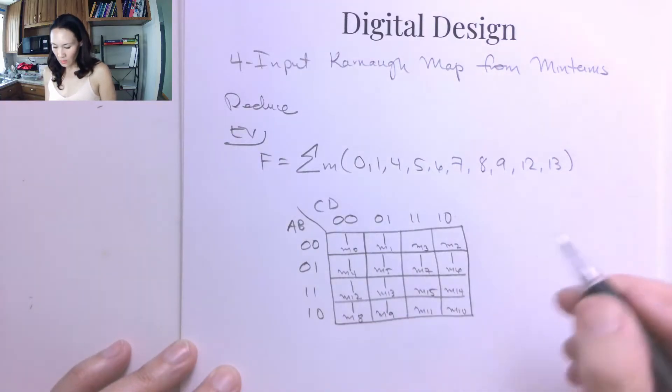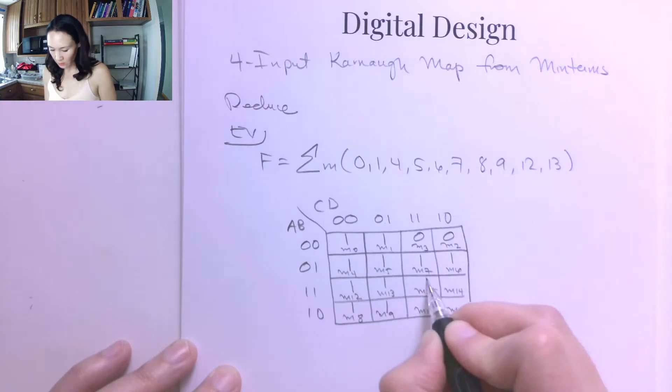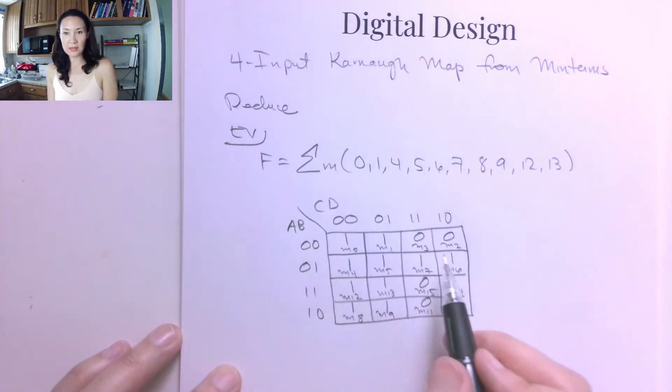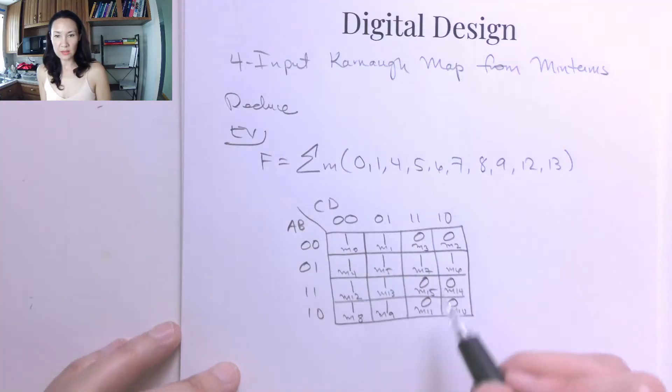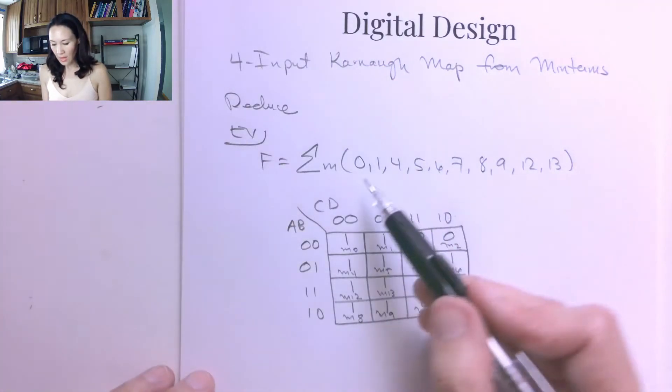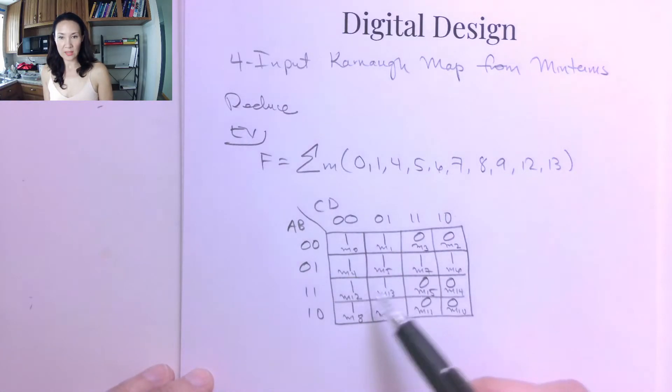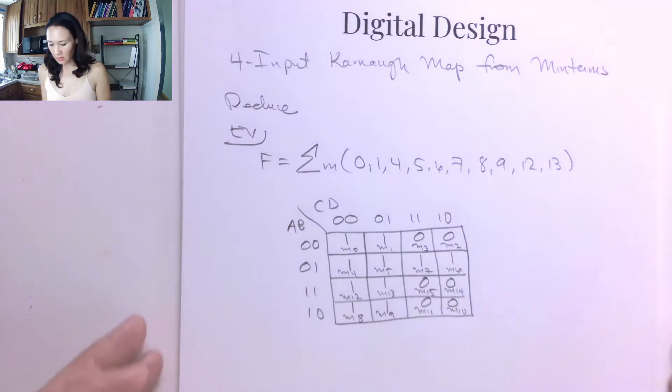And then everywhere else that's not on this list, I know I'm going to have a 0 there. So you don't have to write these little subscript minterms in here. This is just to help me so that I know how to map this list correctly into the right location on the kmap.